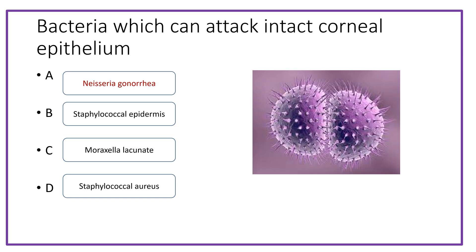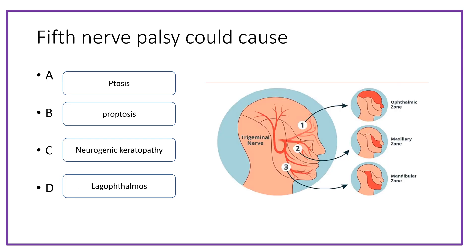The bacteria which can attack intact corneal epithelium is Neisseria gonorrhoeae. Fifth nerve palsy could cause ptosis, proptosis, neurogenic keratopathy, or lack of thalamus sensation. The answer is neurogenic keratopathy.